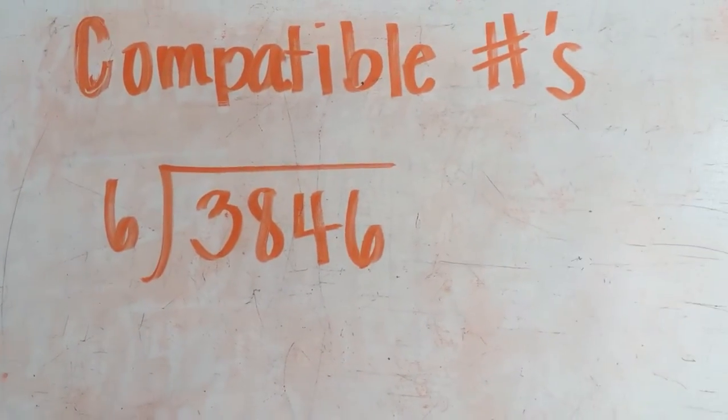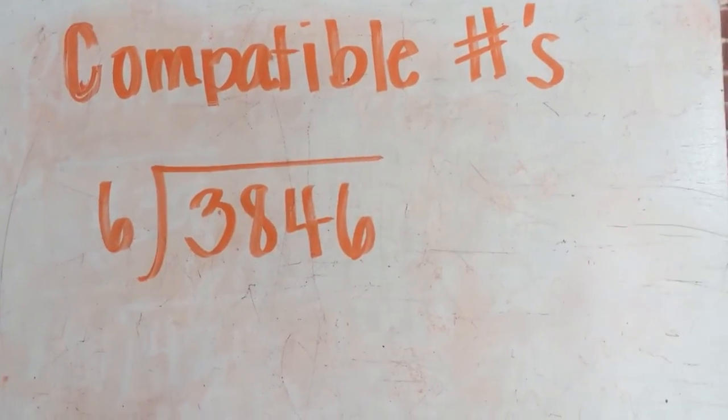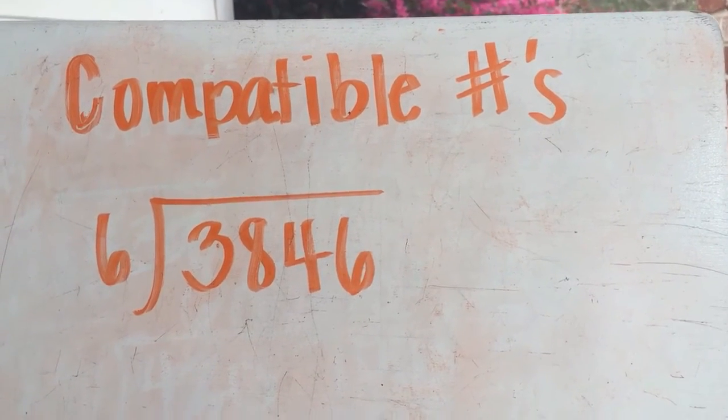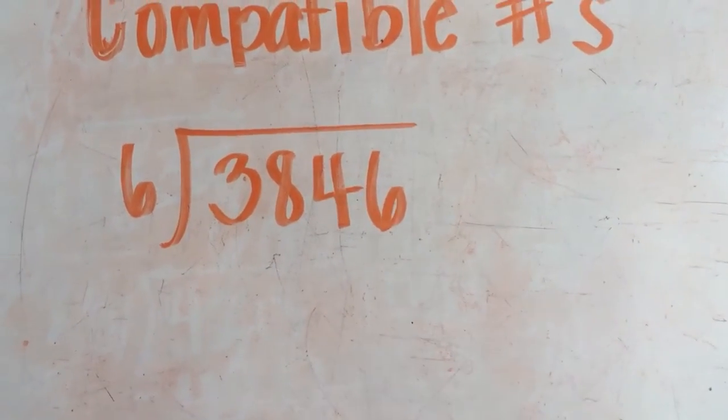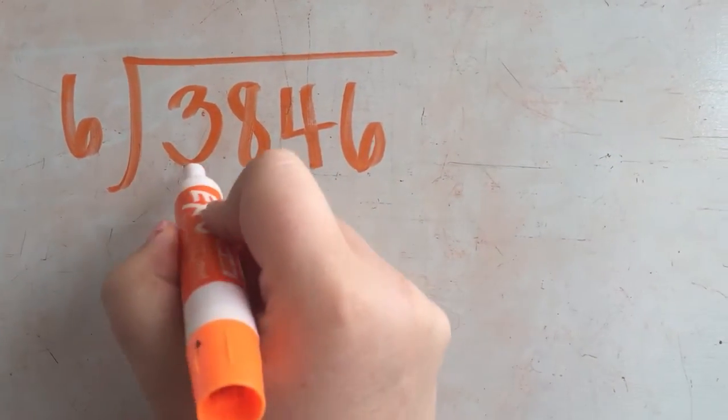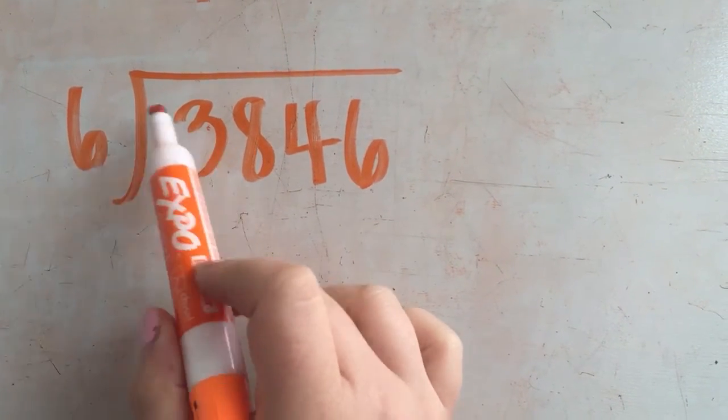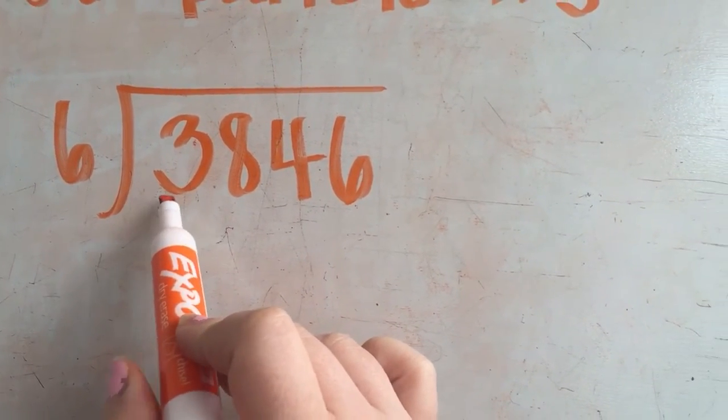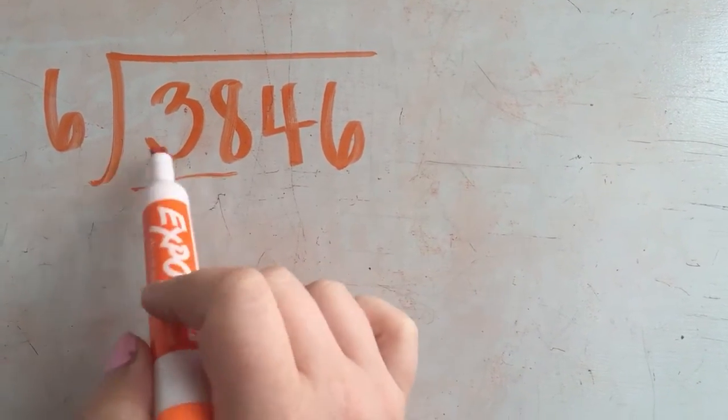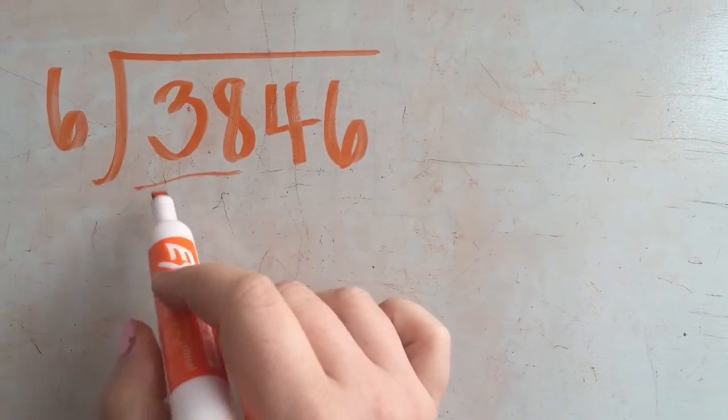I'm purposely using division because I find that that's pretty hard to do. Okay, so what we want to do is we want to look for a multiple because we know we can't divide three out into six, and what we would normally do is divide 38 out into six groups. But since I want to use an estimate, I want to do it fast.